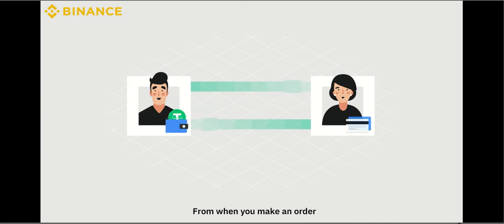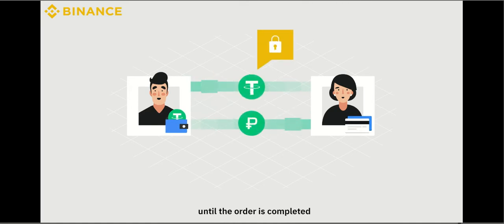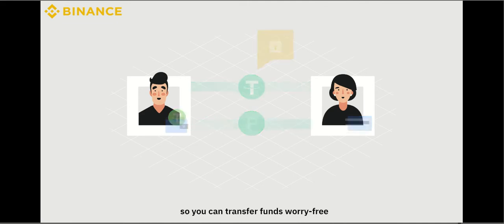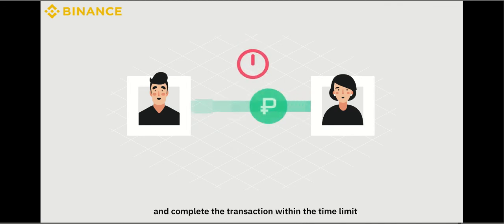The RUB transaction is made outside the Binance platform between you and the seller. From when you make an order, Binance keeps the advertiser's crypto locked away until the order is completed, so you can transfer funds worry-free. Please double-check the payee information and complete the transaction within the time limit.